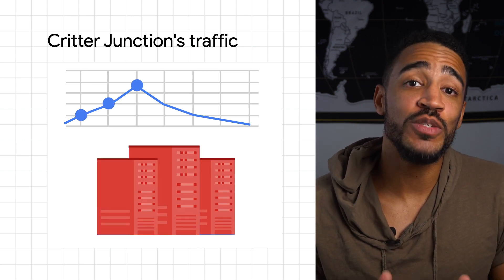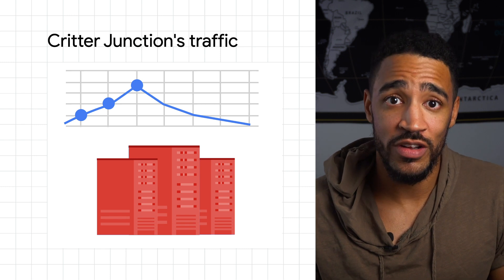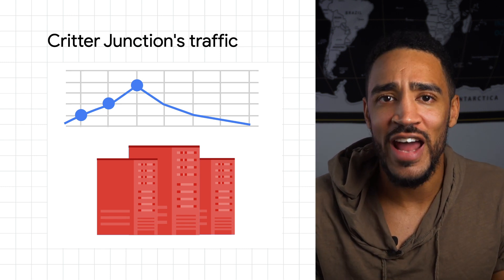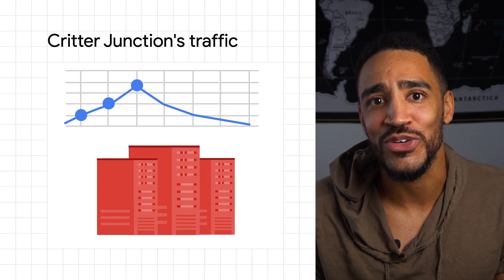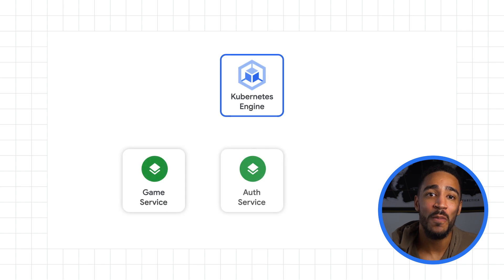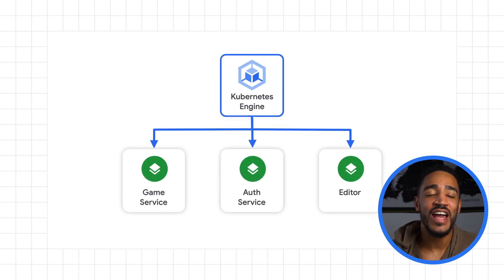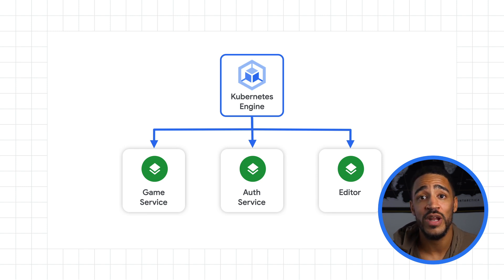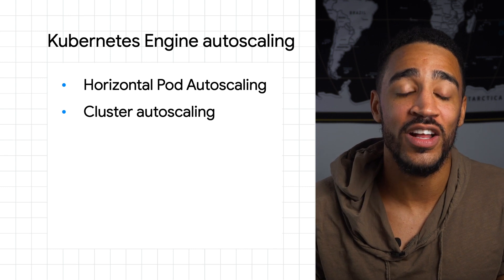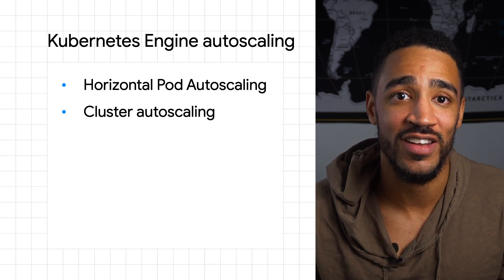Still, that was better than the alternative: risking service outages by not allocating enough resources. Luckily, when Critter Junction switched to a microservice architecture, they decided to host their application on Google Kubernetes Engine, and so they got to use two Kubernetes features that are designed to solve exactly this: Horizontal Pod and Cluster Autoscaling.